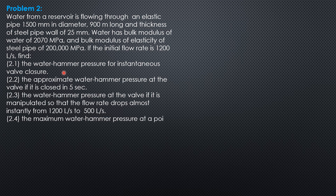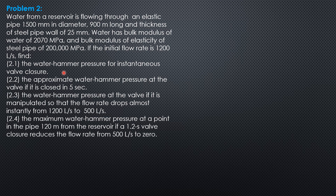Find the approximate water hammer pressure at the valve if it is closed in 5 seconds. Find the water hammer pressure at the valve if it is manipulated so that the flow rate drops almost instantly from 1,200 liters per second to 500 liters per second. Find the maximum water hammer pressure at a point in the pipe 120 meters from the reservoir if a 1.2-second valve closure reduces the flow rate from 500 liters per second to zero.